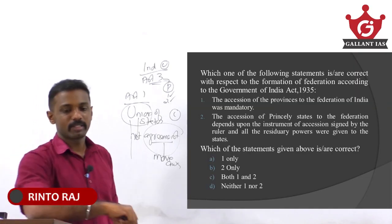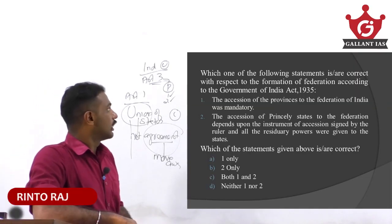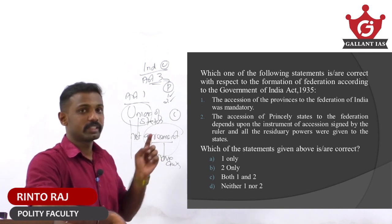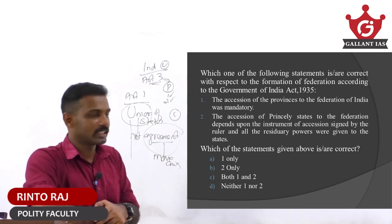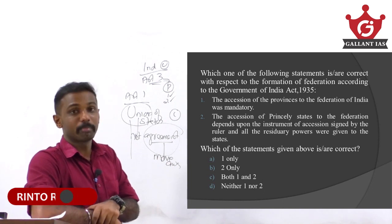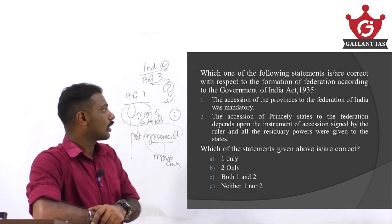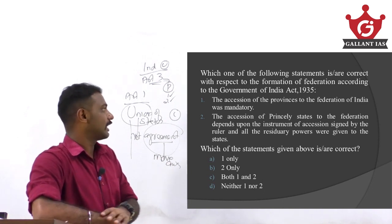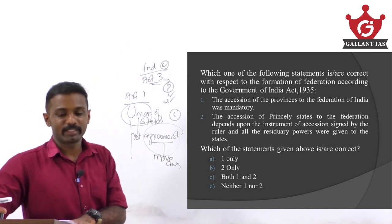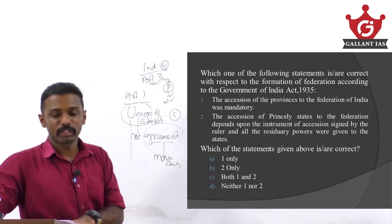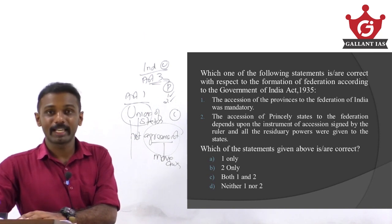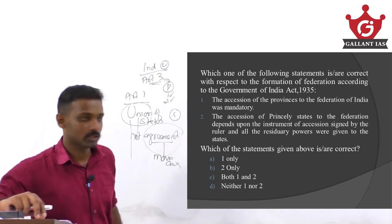Which one of the following statements is correct with respect to the formation of Federation according to the Government of India Act of 1935? The accession of the provinces to the Federation of India was mandatory. The accession of the princely states to the Federation depends upon the instrument of accession signed by the ruler, and all residuary powers were given to the states — that is, the princely states.